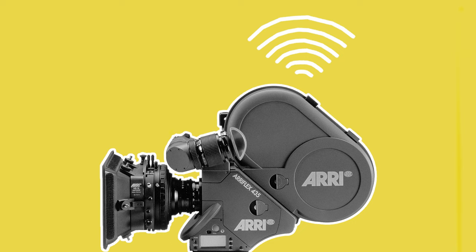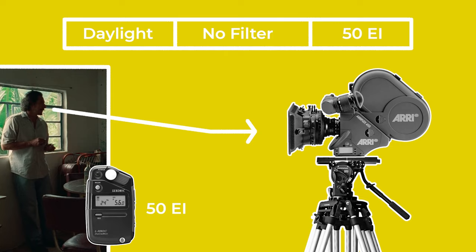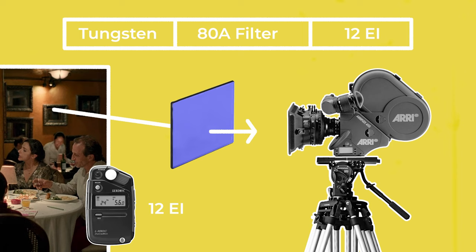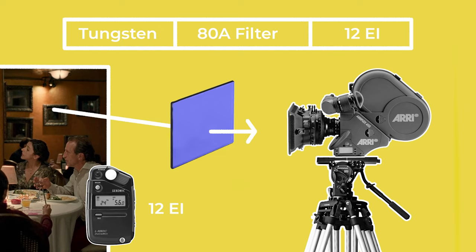Next we have a table that indicates how the film should be exposed in different lighting conditions. Under daylight, no extra filters are required and the film can be exposed with an EI of 50. When shooting with a 3200K tungsten light source, Kodak recommends using a cooling 80A filter, which changes the light from 3200K to 5500K or daylight. Adding this filter lets through less light, so in this situation Kodak recommends exposing the film with an EI of 12.